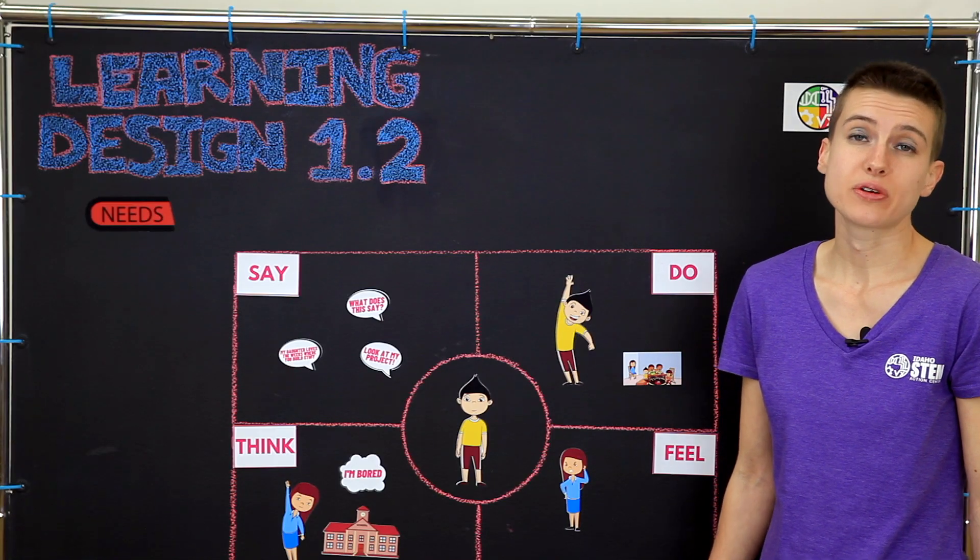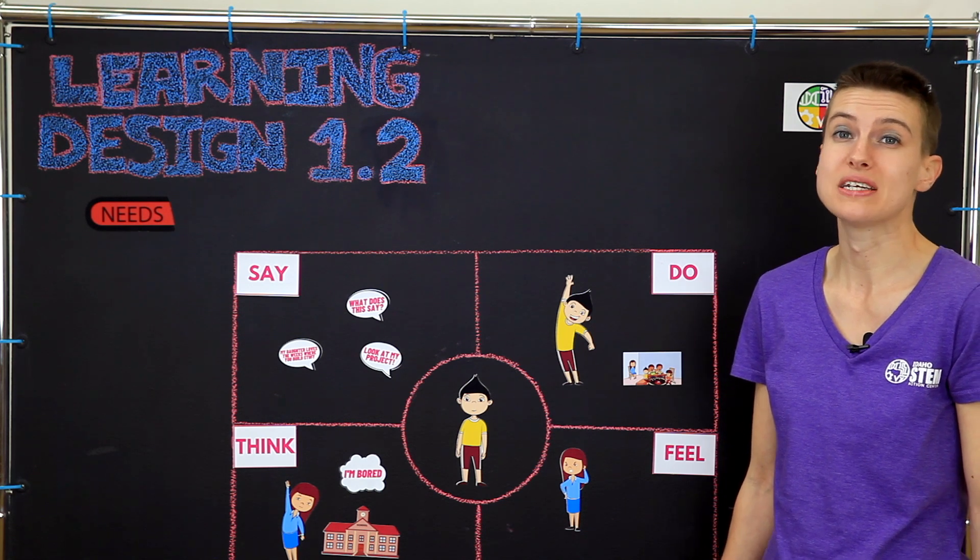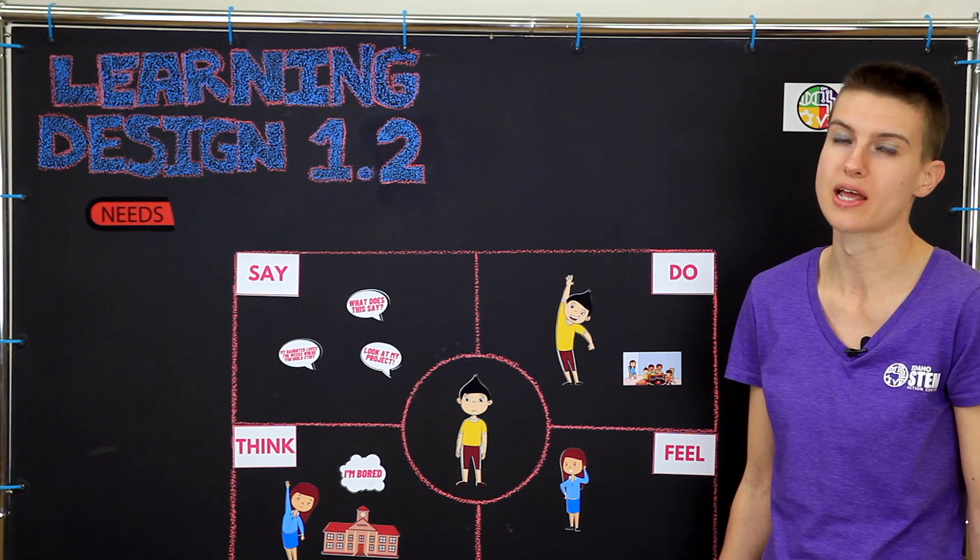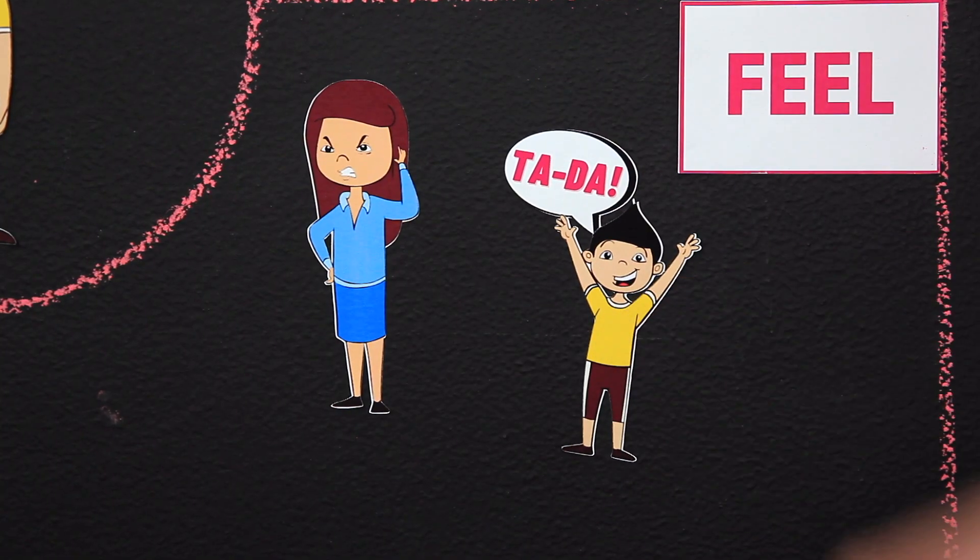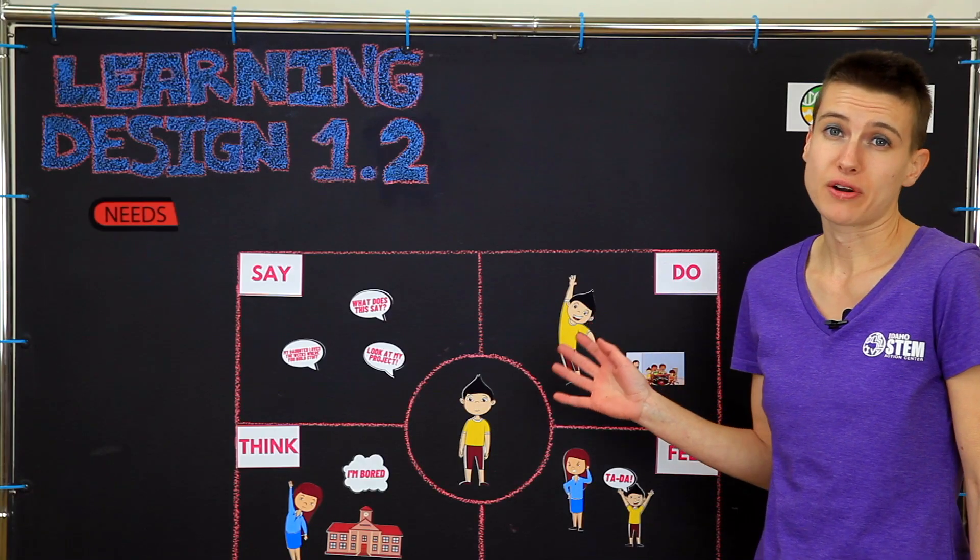Let's consider another scenario where a student who normally never wants to show me what he's working on is suddenly really excited to show me his project. I can probably infer he's feeling especially proud of his work. This is a great start for an empathy map.